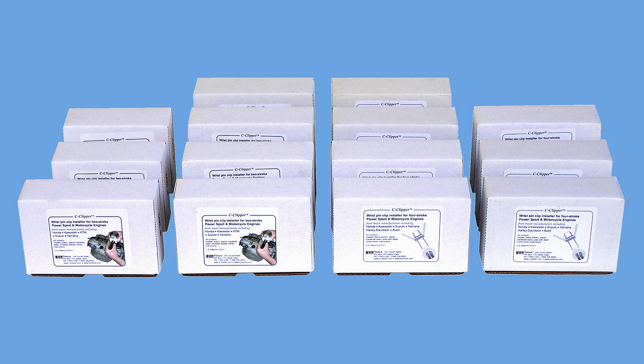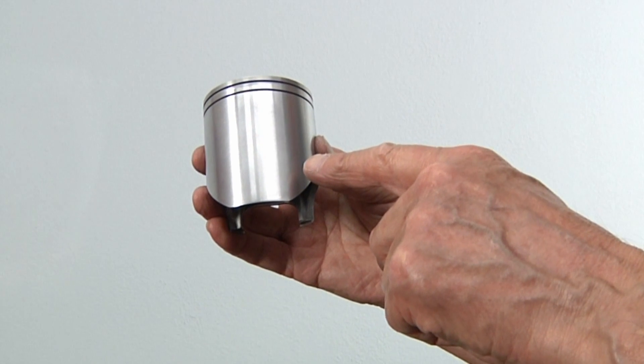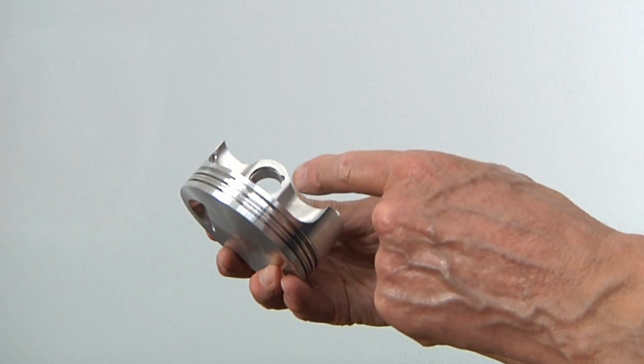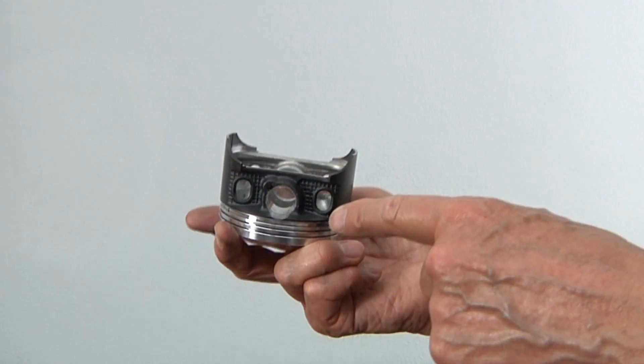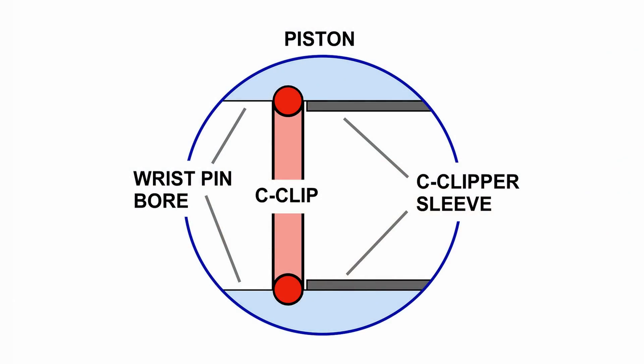The other thing to bear in mind is the piston style. Plain, mostly two-stroke like this one, and undercut, mostly four strokes like this. C-Clippers for these two types of pistons work on the same principle, but the setup is a little bit different.